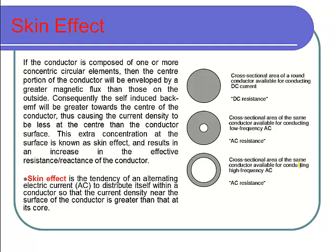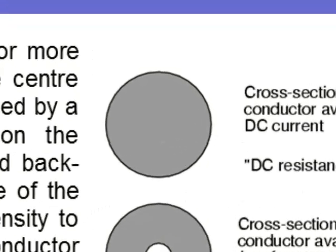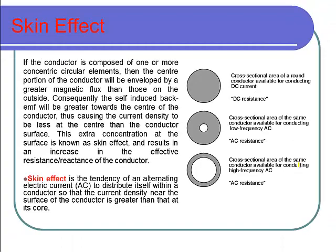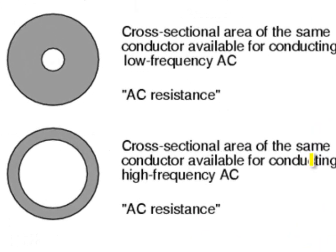For a DC system, if we take any conductor and pass DC current through it, the current will flow evenly over the entire cross-section of the conductor. However, this is not possible with an AC supply — when passing AC current through a conductor, the current only concentrates on the outer surface of the conductor.